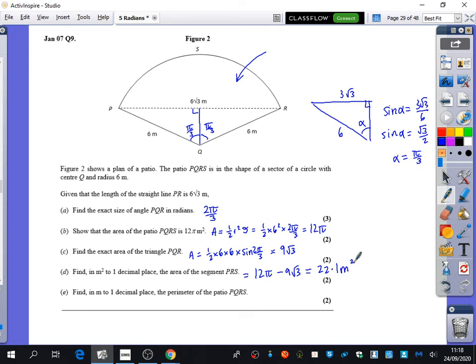And then the last thing it wants us to do in meters to one decimal place is the perimeter of the patio PQRS. So that one's pretty easy just for two marks there. So we've already got the six and the six here, so the perimeter is going to be six plus six plus... how do you find this curved bit here? R theta, which is just going to be six multiplied by theta, and theta is two pi over three. Whack that in the calculator and what do we get to one decimal place? 24.6 meters.